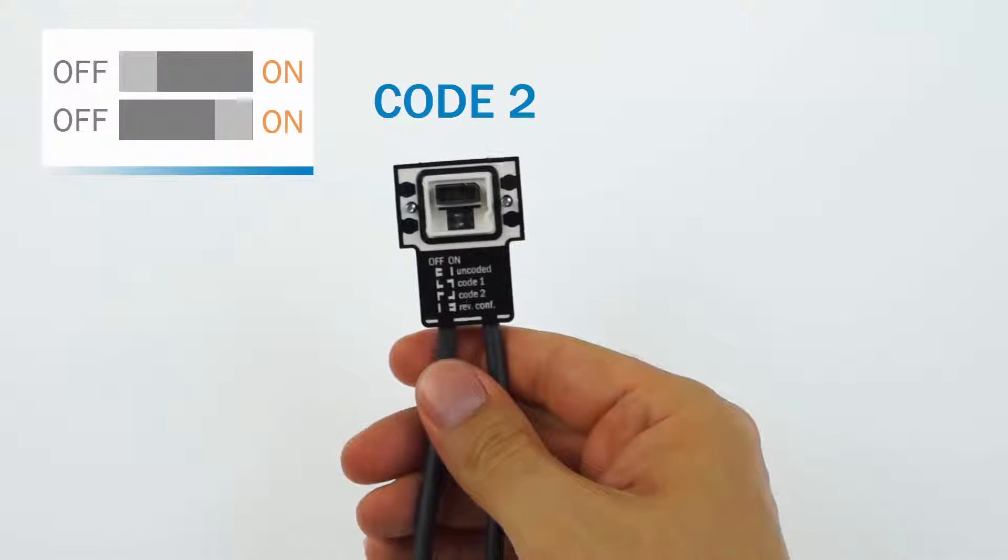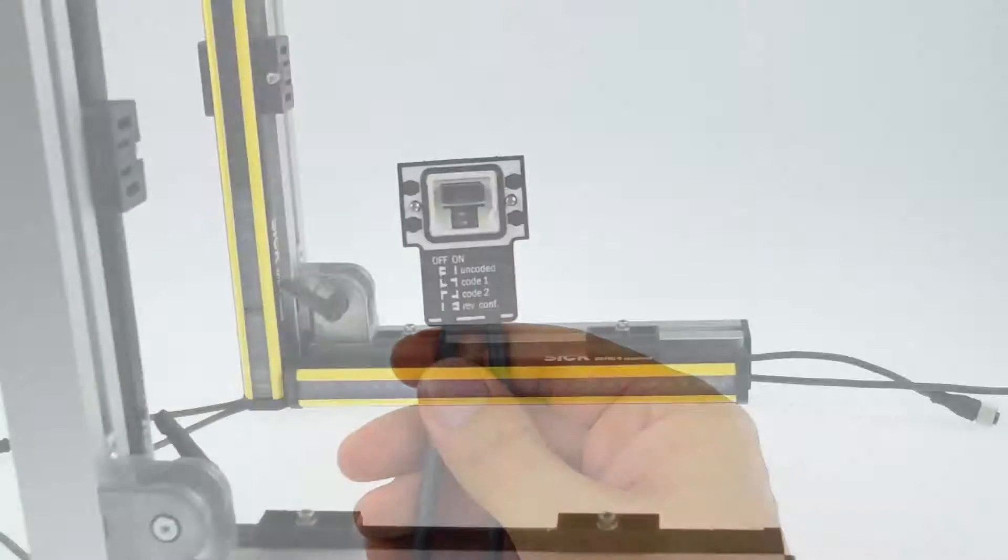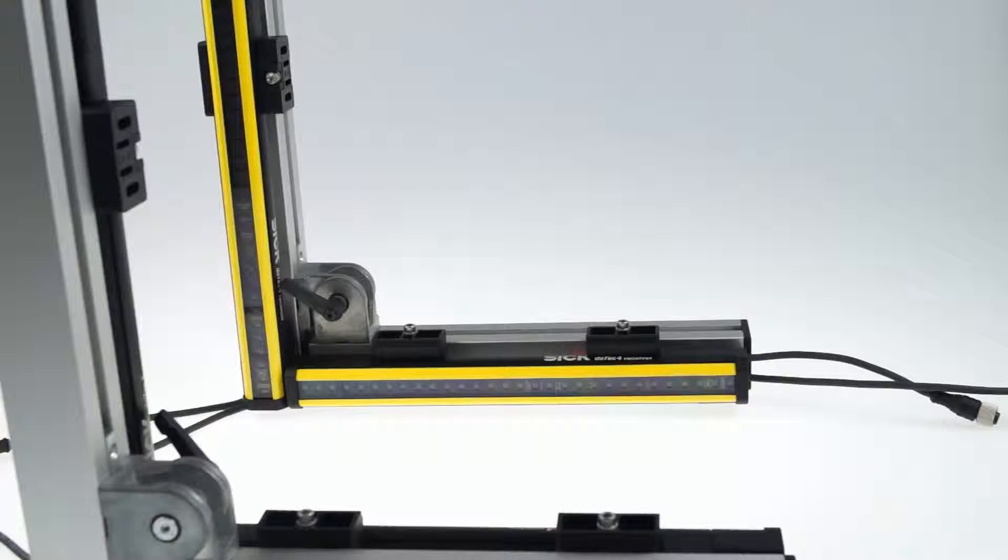Make sure to code all corresponding devices accordingly. If beam coding is configured the field LEDs flash once yellow for code 1 and twice yellow for code 2 each time the system starts up.